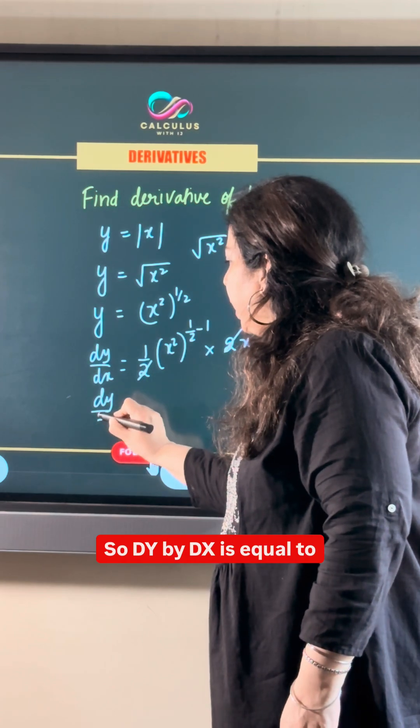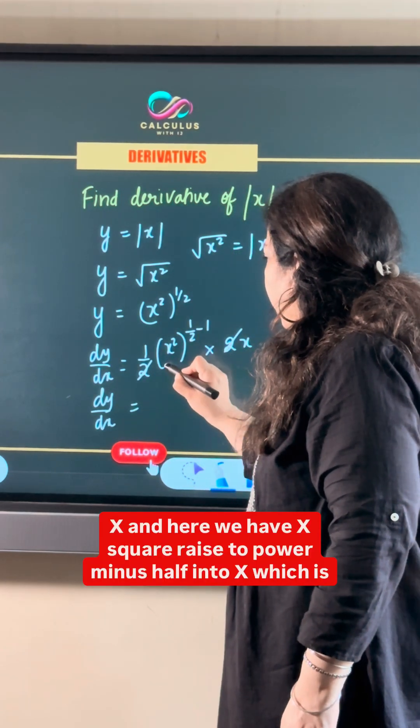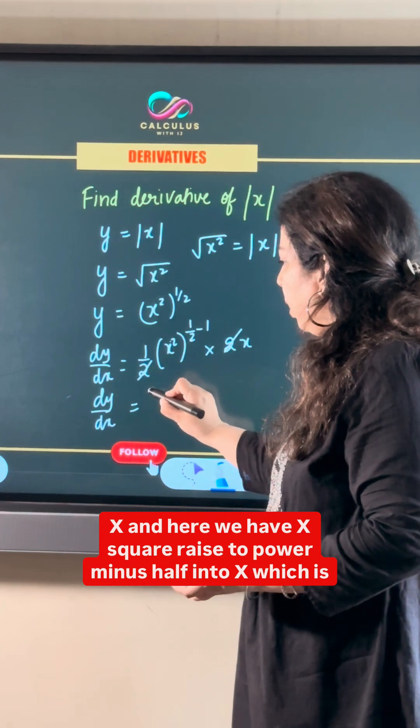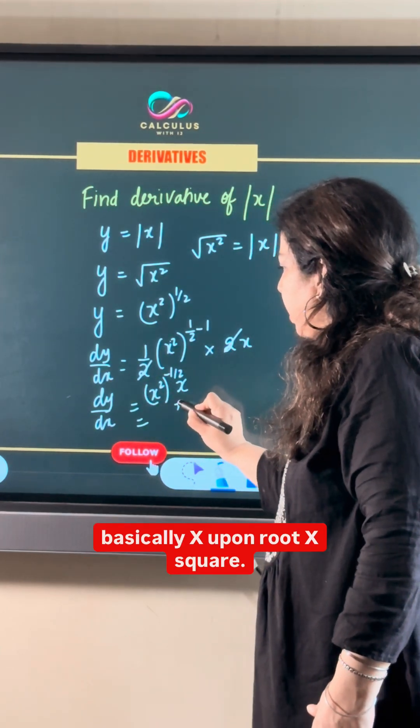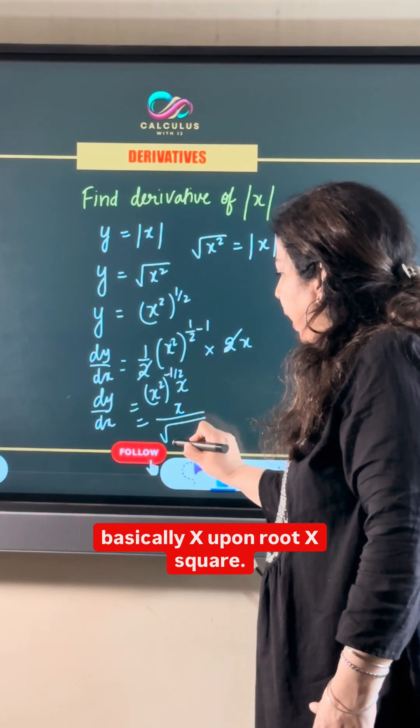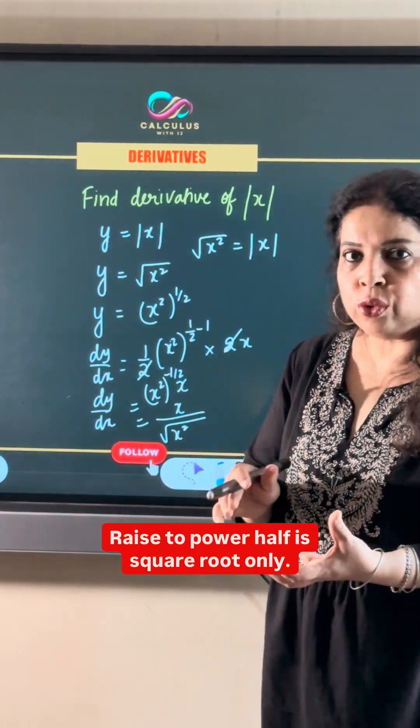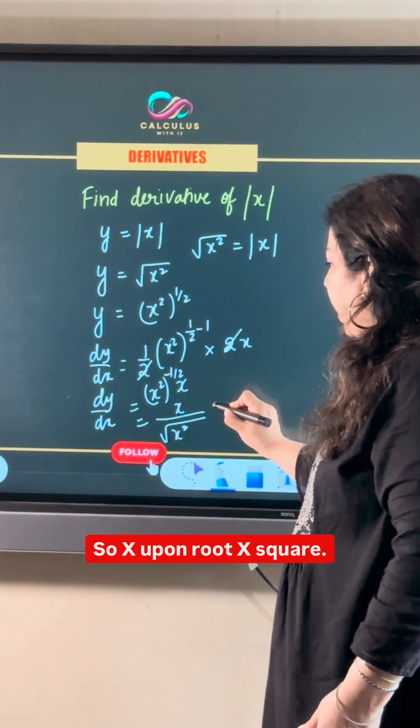So dy by dx is equal to x and here we have x square raised to power minus half into x which is basically x upon root x square because raised to power half is root only. So x upon root x square.